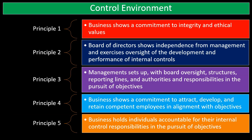Number five: the business holds individuals accountable for their internal control responsibilities in the pursuit of objectives. This lines up with first determining what the responsibilities are for different individuals, then determining whether or not individuals have followed through. We want to see that the people responsible for certain objectives are the ones being held accountable if those objectives are not met.